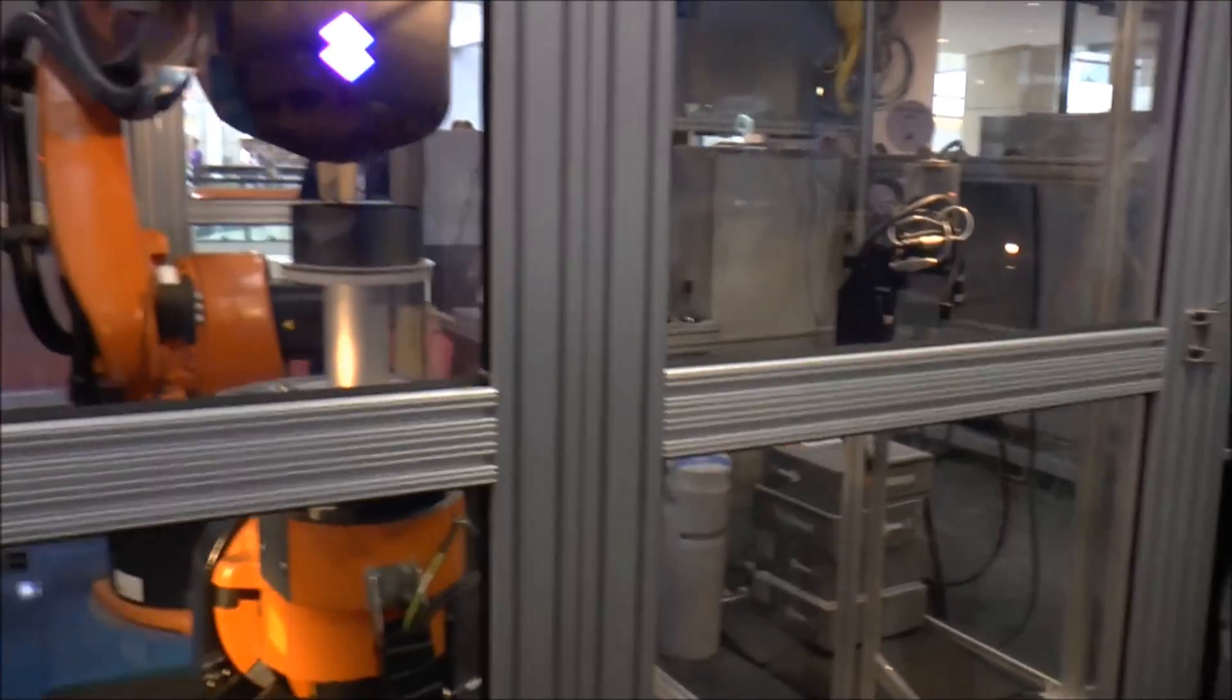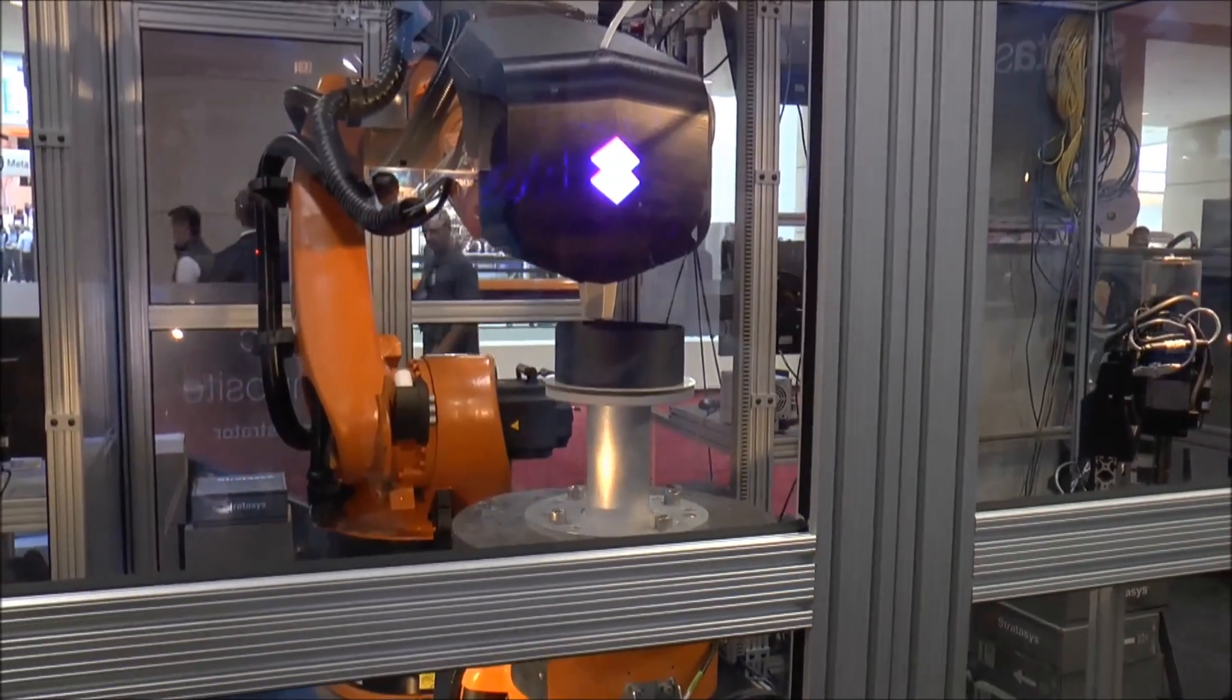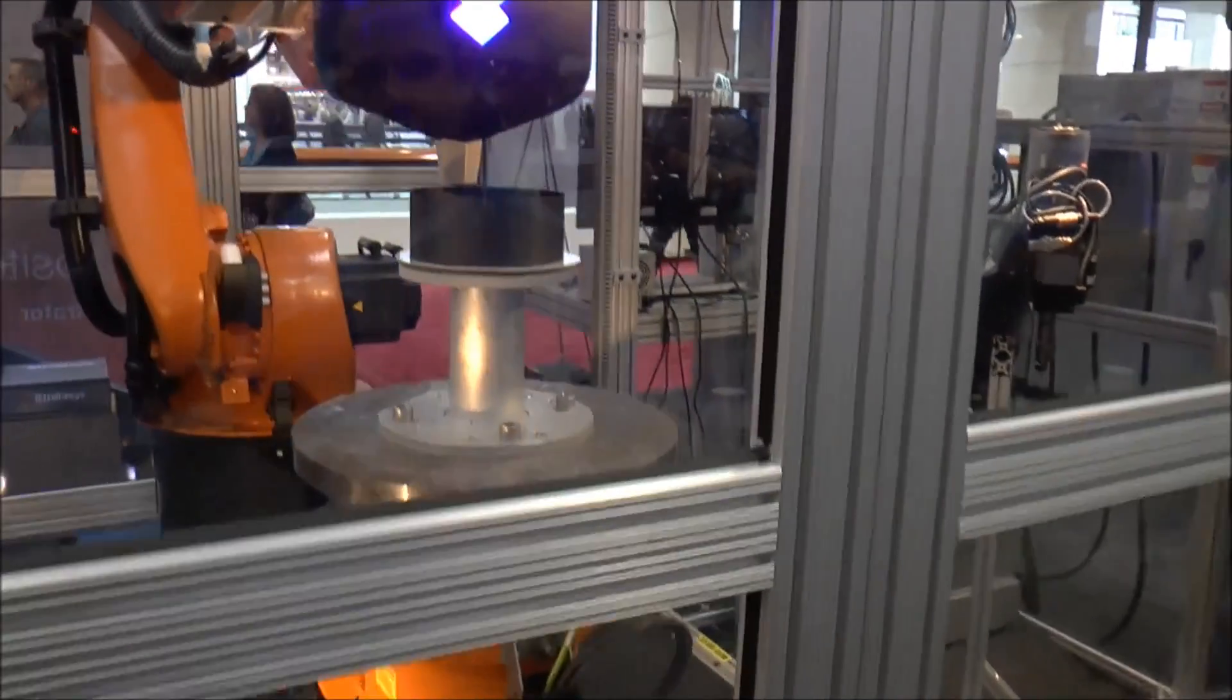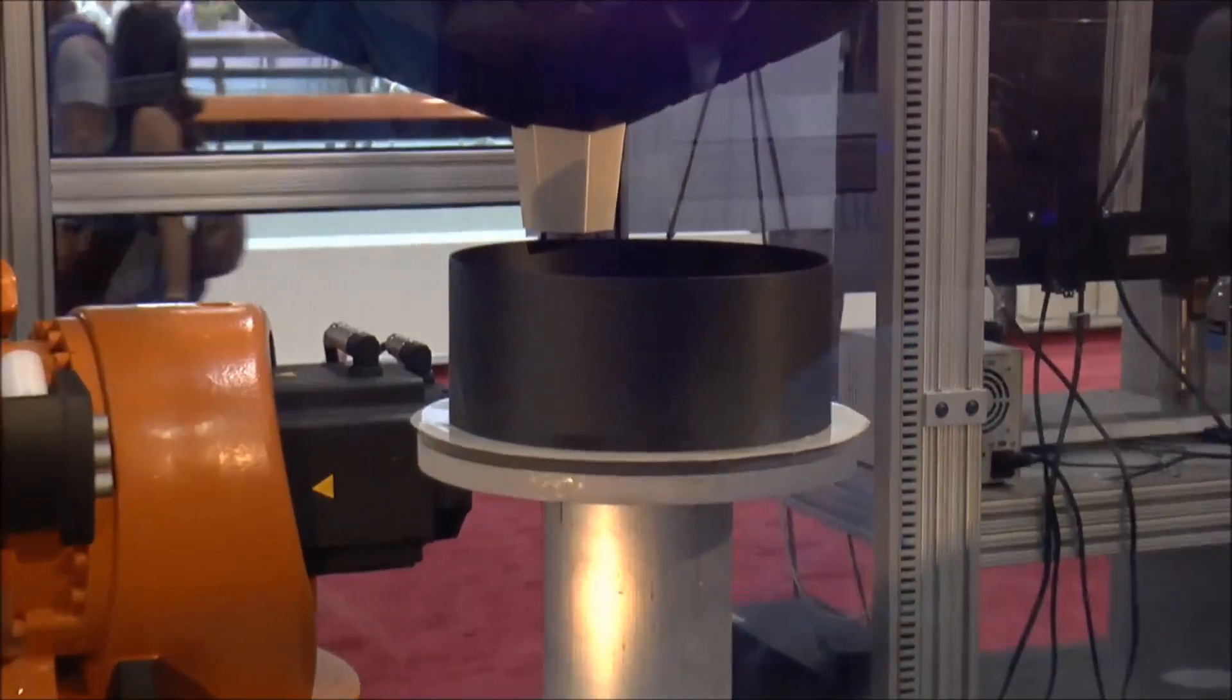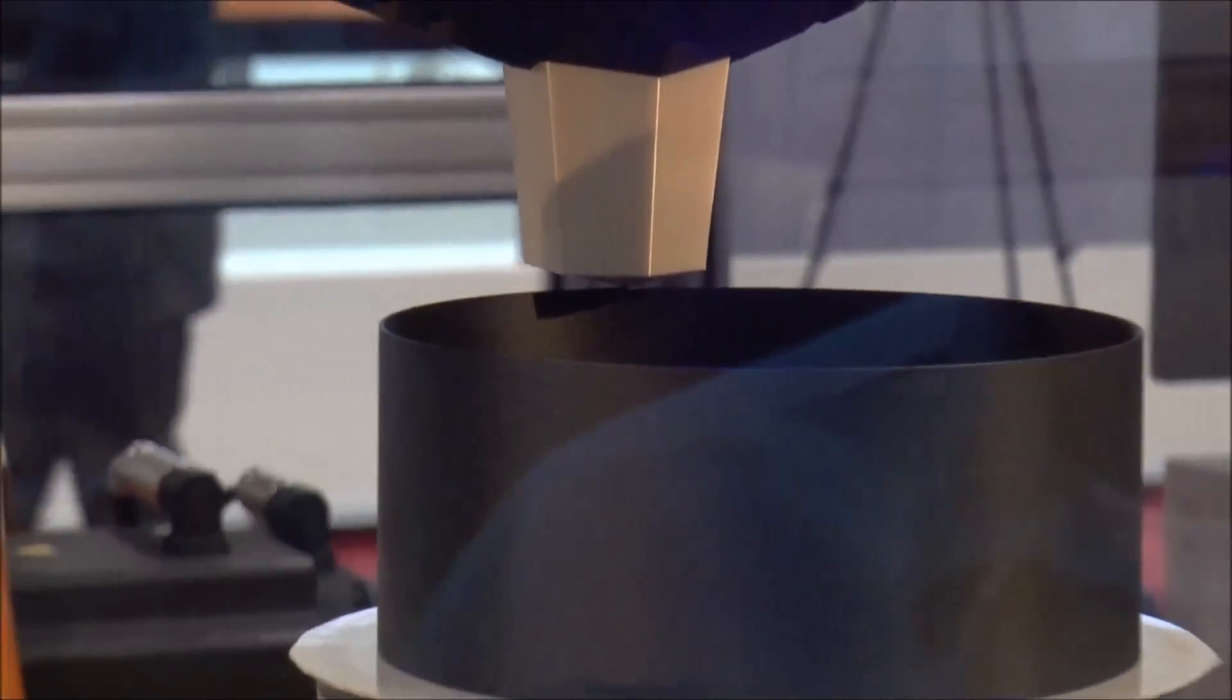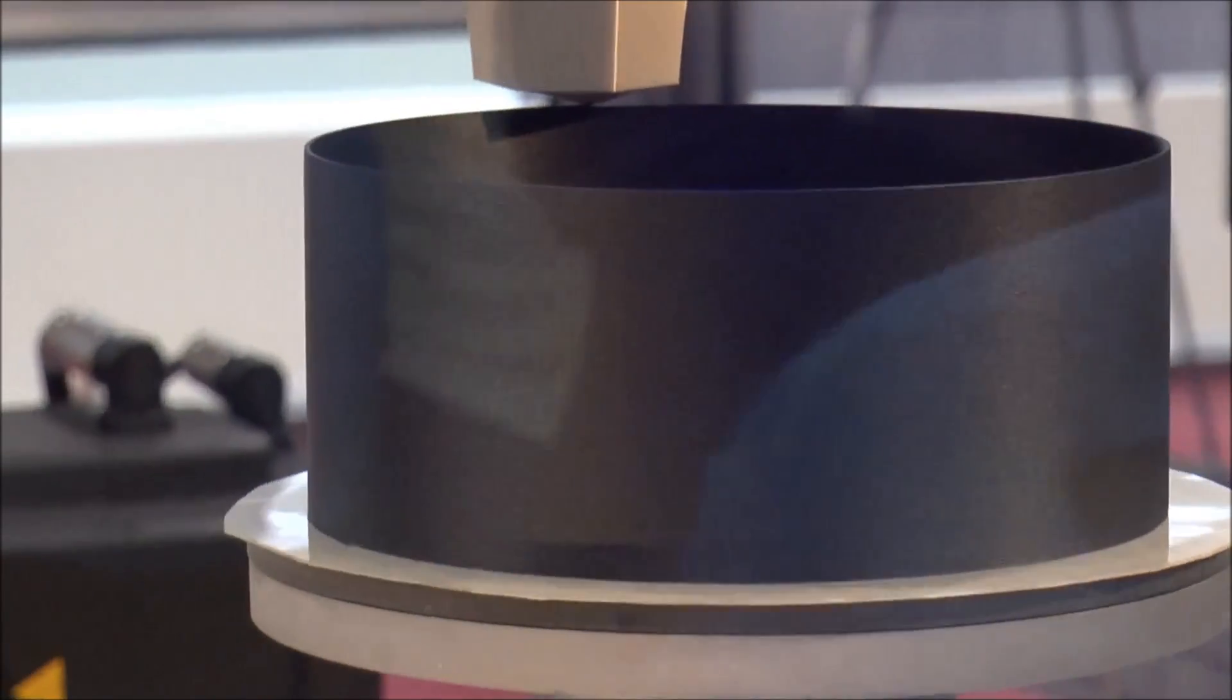We're actually able to orient the fibers as we deposit them to maximize the load transfer in a given application. What you see printing here is a structural dome that's got some reinforcing ribs that will be printed normal to the surface as the table transitions 90 degrees and all eight axes come into play.